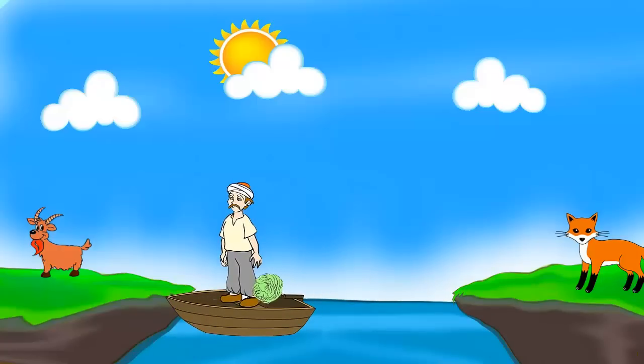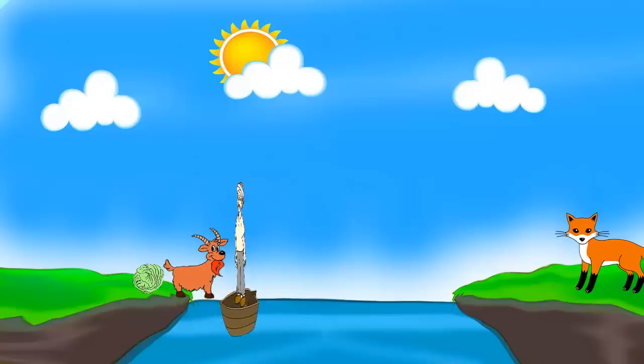At the village end, he drops the cabbage there and makes the goat jump onto the boat and rows back to the fox.